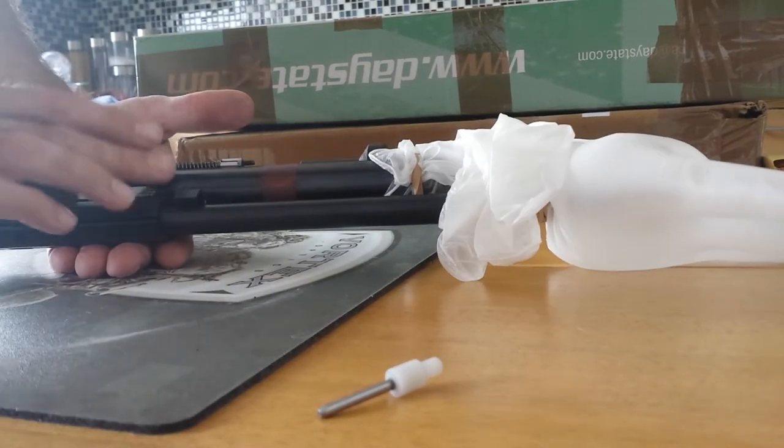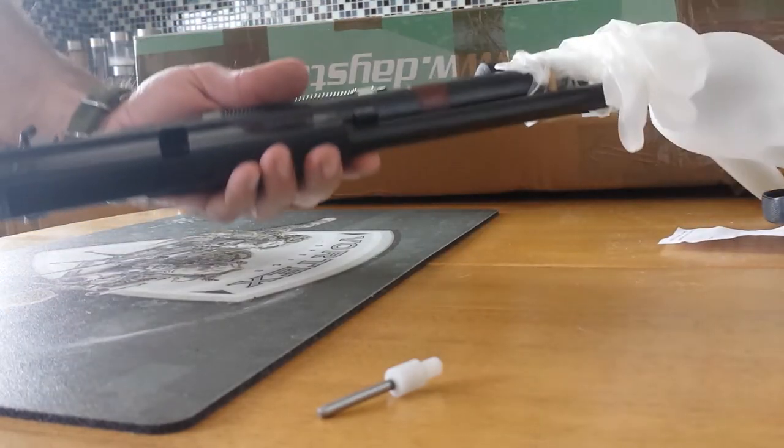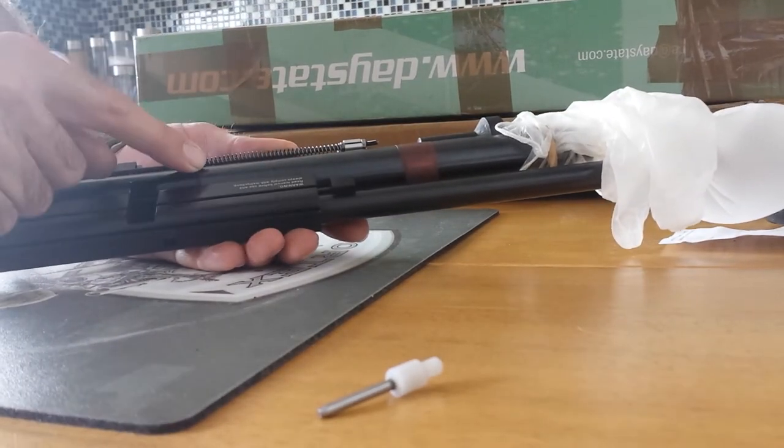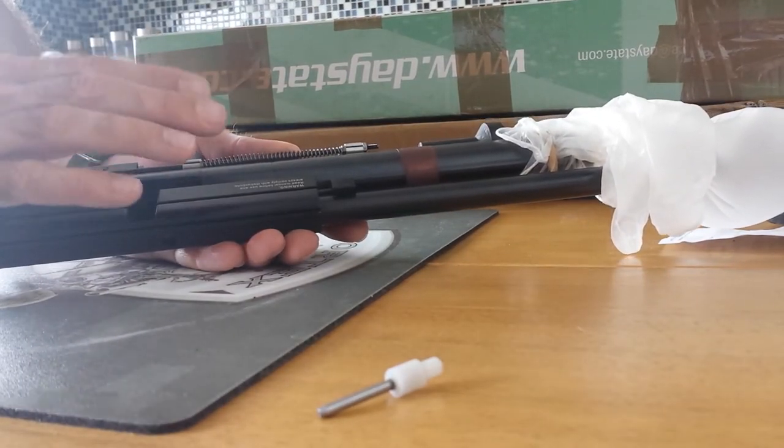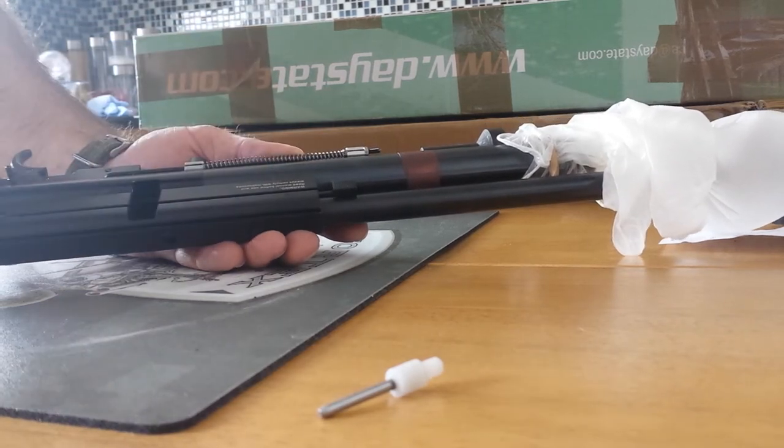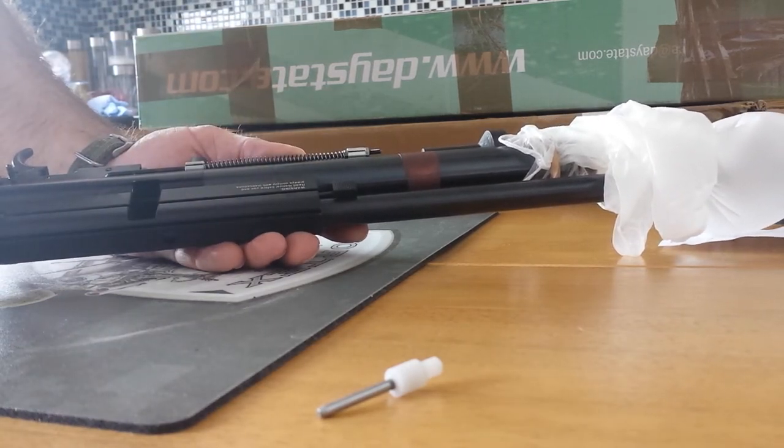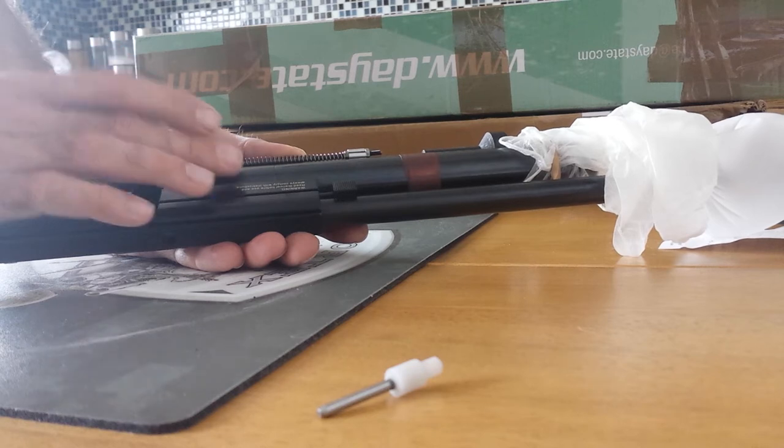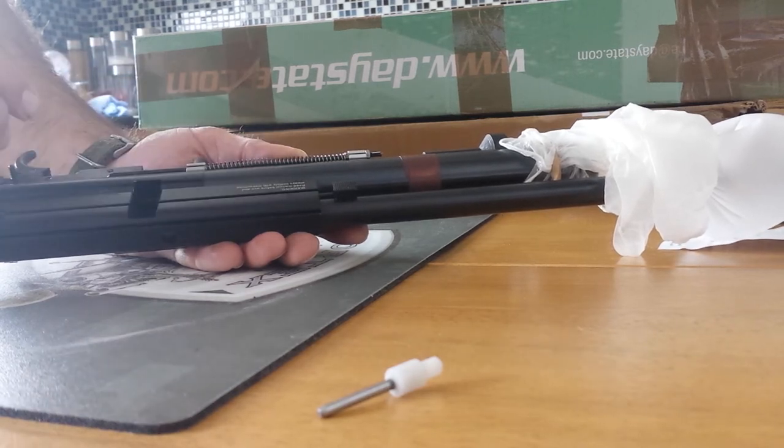Other options are to use something like a leak detector spray on the joints. But just bear in mind that a lot of the parts on these rifles are steel, so if you use soapy water there's a good chance that things will rust because of the water. Water and steel don't like each other.